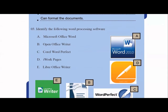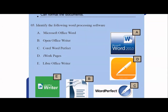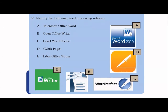In activity three, they've given some pictures and are asking you to fill in the squares. The first one, A, is Microsoft Office Word — this is the relevant icon. B is Open Office Writer. C is Corel WordPerfect. D is iWork Pages. And the final one is LibreOffice Writer — that's easy because the name itself is visible there.